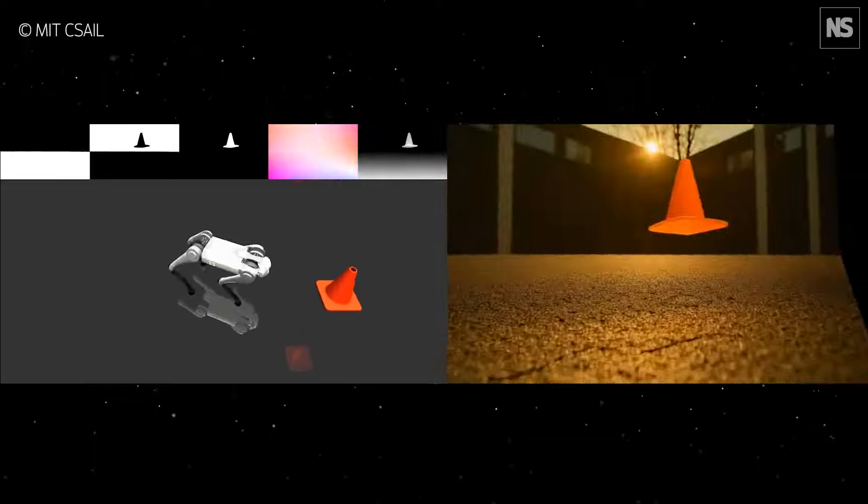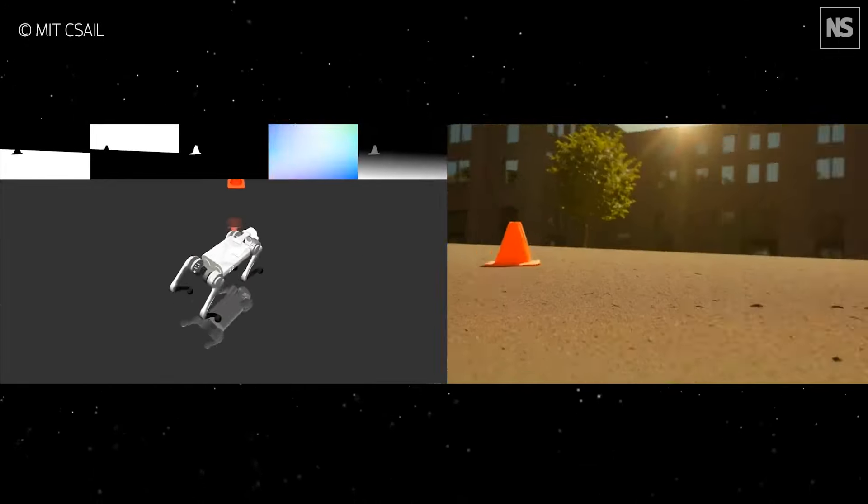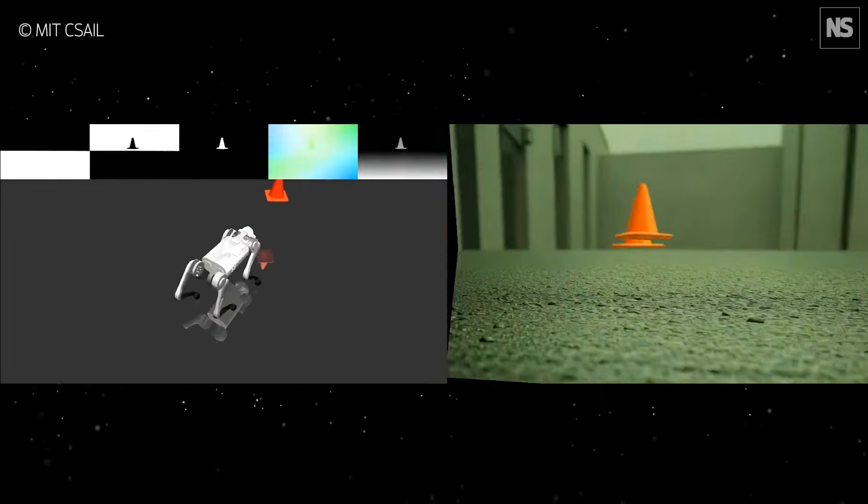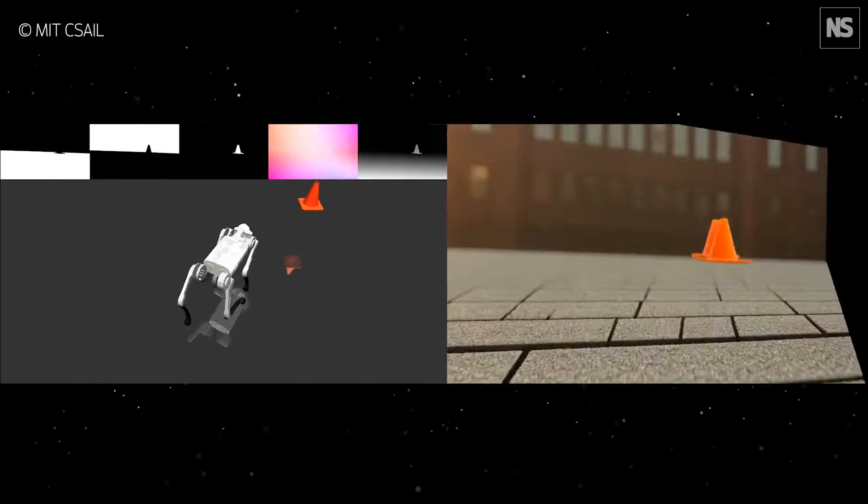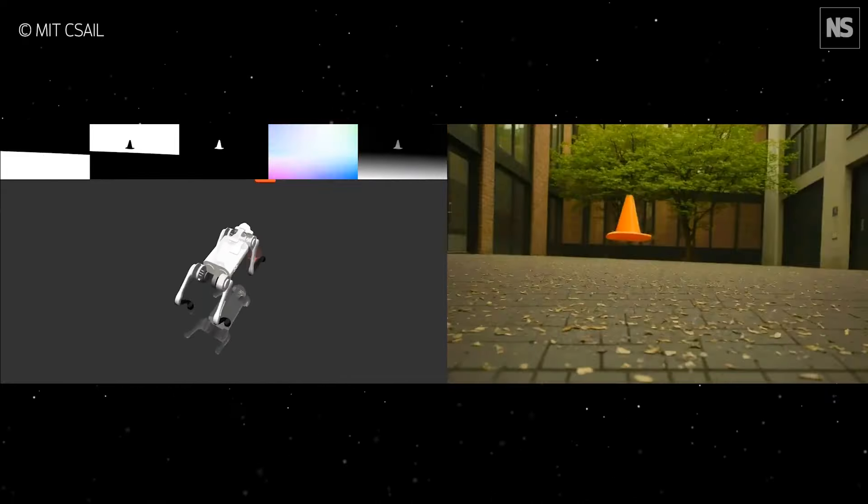This is what the robot sees. Each frame is rendered with a generative model. By flashing between different visual experiences, the robot gains an understanding of the many ways the world might look.